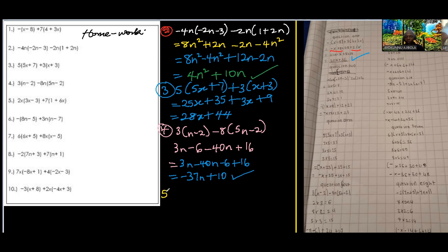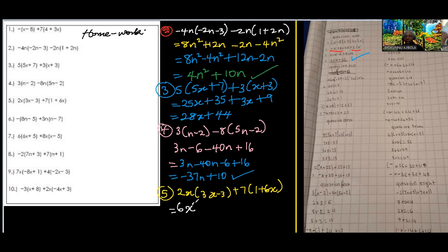Question 5: we have 2x into 3x minus 3, plus 7 into 1 plus 6x. Let's do this together: 2 times 3 is 6 and x times x is x squared. Then 2 times negative 3 is negative 6x. This other one is 7 times 1 which is 7, and 7 times 6 is 42x. Two of the terms have x while the rest have nothing in common.